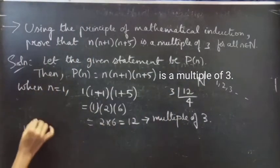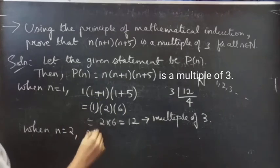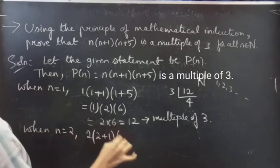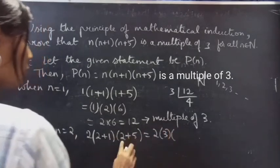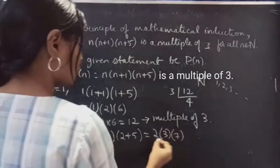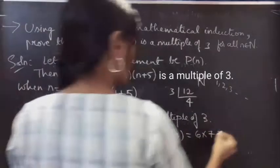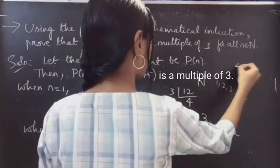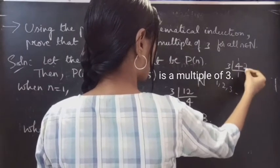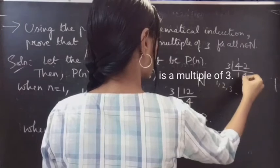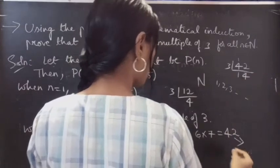Now let's check for n=2. When n=2, substitute n=2 in the given statement: 2×(2+1)×(2+5) = 2×3×7 = 42. And 3×14=42, which is again a multiple of 3.